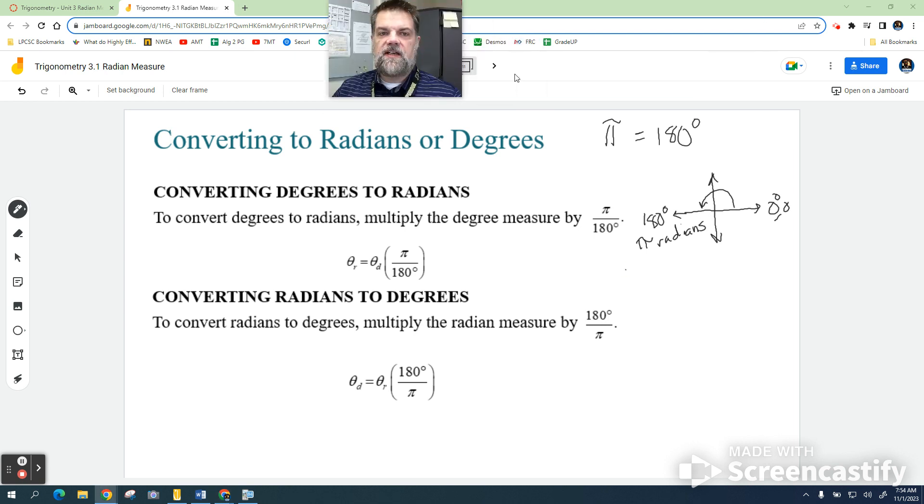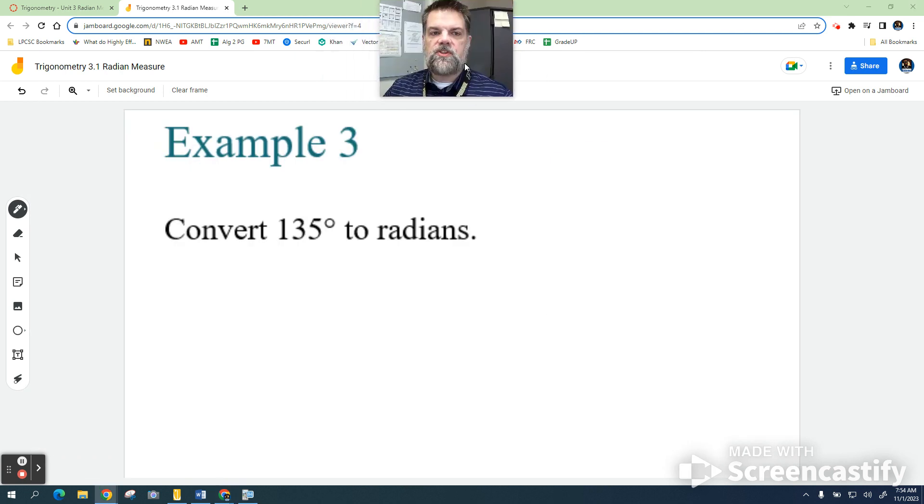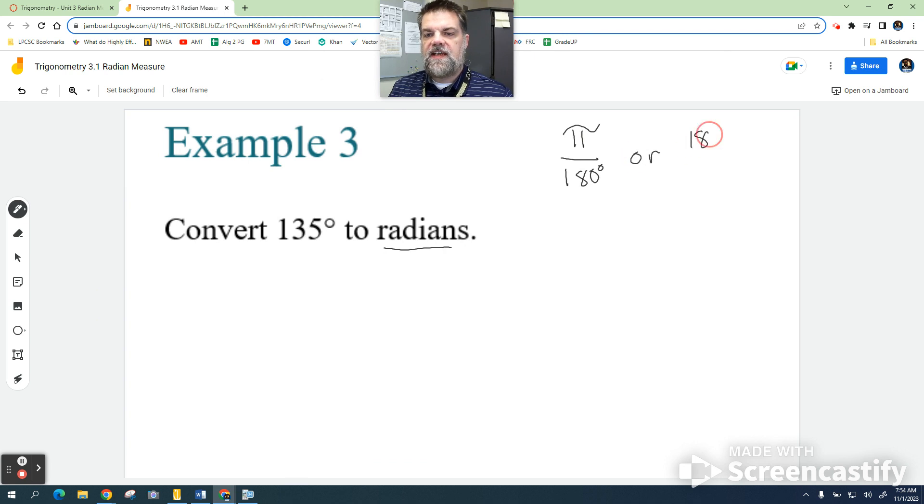So what we'll do, let's do a couple of conversion problems. So I want to convert to radians, so I have to make a decision. Do I use pi over 180 degrees, or do I use 180 degrees over pi?